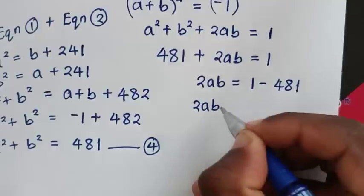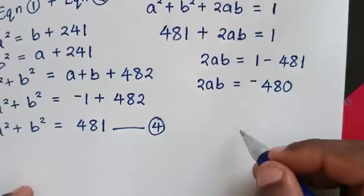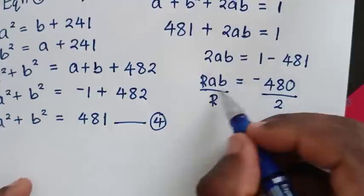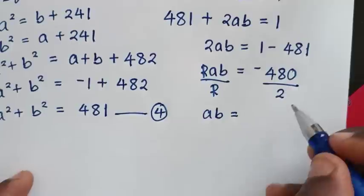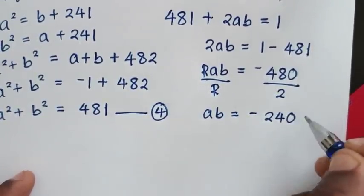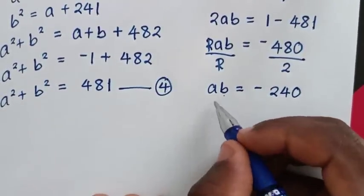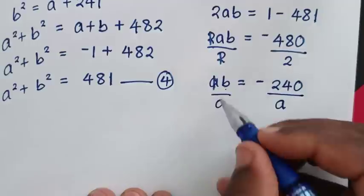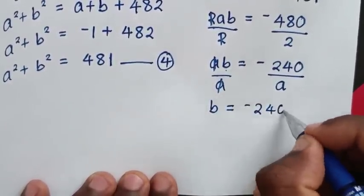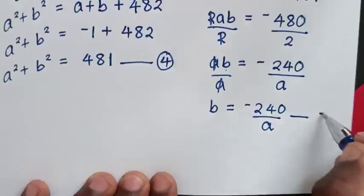So 2ab equals negative 480. Dividing both sides by 2, we get ab equals negative 240. Making b the subject by dividing both sides by a gives b equals negative 240 over a. We'll call this equation 5.